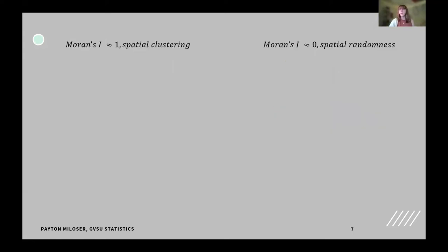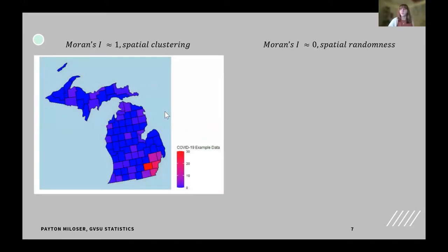Moving on, Moran's i also has a range very similar to a regular correlation coefficient in that it ranges from negative one to one. So, when Moran's i is about one, we get what's called spatial clustering. On this example data, you can see that there's this cluster of counties in this lower right-hand corner of the state of Michigan where we have all these potentially an outbreak and spread going to these other counties.